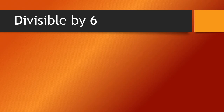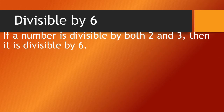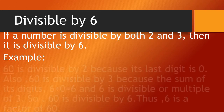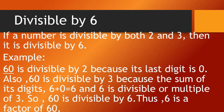How about numbers which are divisible by 6? If a number is divisible by both 2 and 3, then it is divisible by 6. Example: 60 is divisible by 2 because its last digit is 0, which is an even number. Also, 60 is divisible by 3 because the sum of its digits, 6 plus 0, is 6, and 6 is divisible by — or a multiple of — 3. So, 60 is divisible by 6.